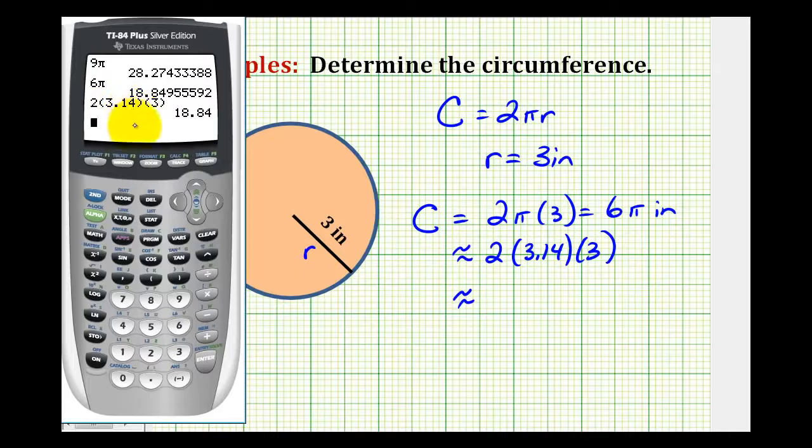you don't want to use the pi key on the calculator because it could possibly give you a slightly different answer when you round. We'll go ahead and use the more accurate value of approximately eighteen point eight five inches.